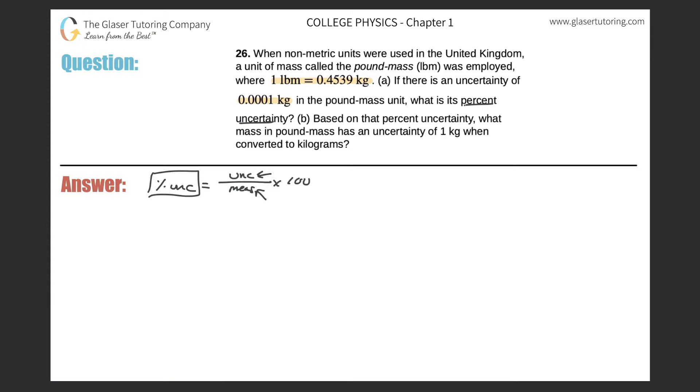So we're looking to find the percent uncertainty. In order to find this, we need to know these two variables. We need to know the uncertainty associated with the measurement and the measurement itself. So do we know those two things? Well, yeah, I think so. It says if there is an uncertainty of this many kilograms, so that value does tell us the uncertainty. Okay, so we have one of the two items we need. Now we just got to look for the measurement.